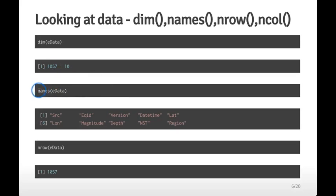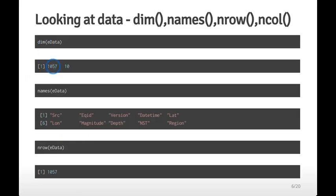You can also look at the names of the variables in the data frame by applying names() to edata, giving you the list of all ten variable names. You can also look specifically at the number of rows or columns — dim() gives you both, with the row number first and the column number second, or you can get them individually using nrow() and ncol().